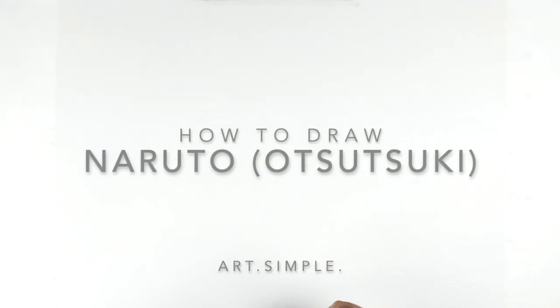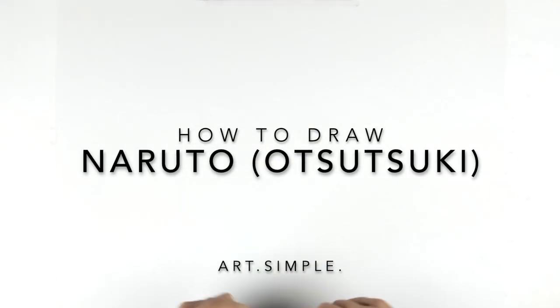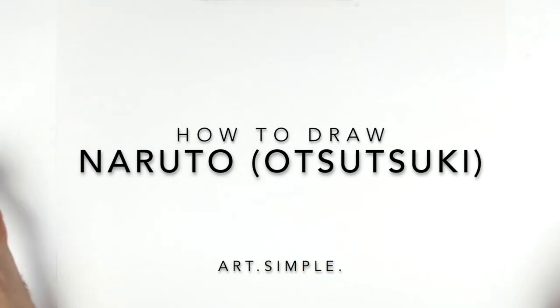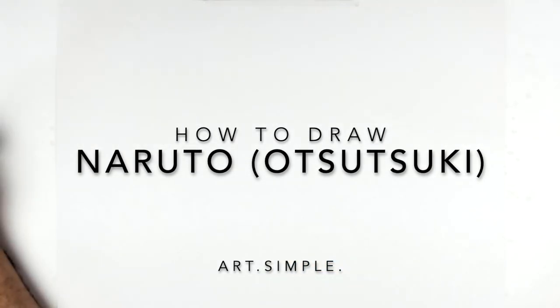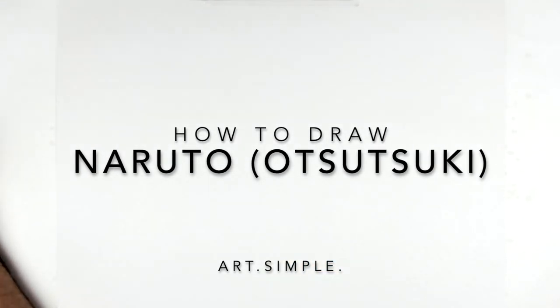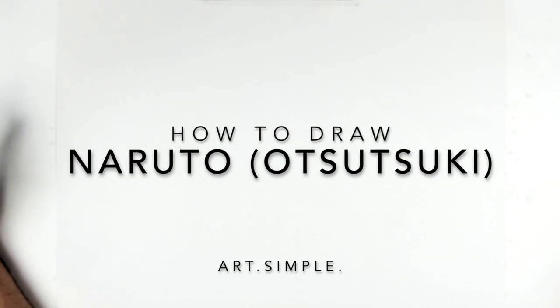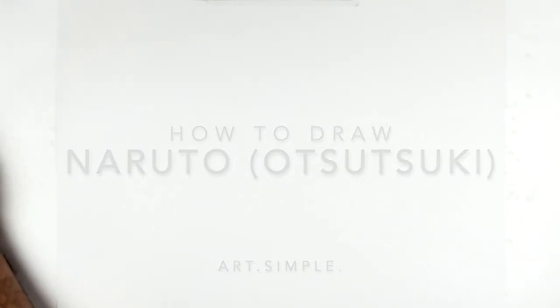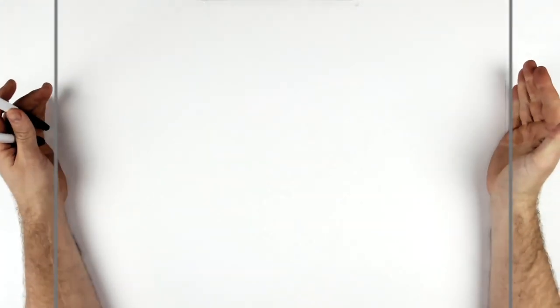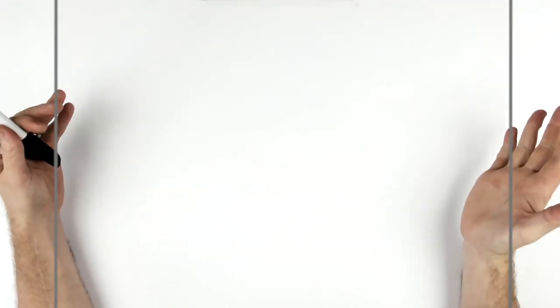So I saw a request for Naruto Otsuki form and I was like, that's a thing? So I looked it up and yeah, it's like a fan image. It's really cool, like he's got Hagoromo's soul or something. He becomes like the vessel for Hagoromo.